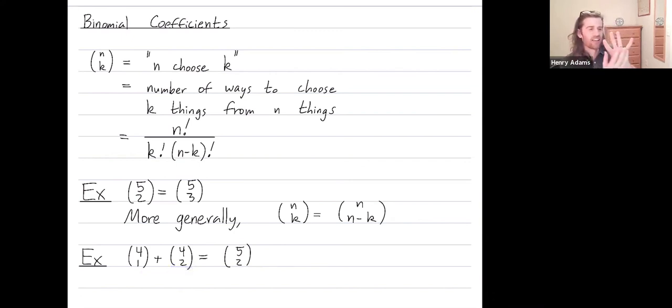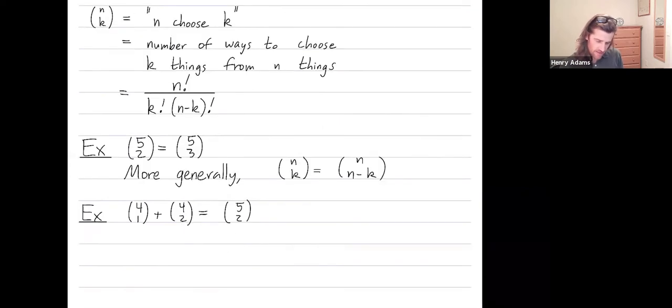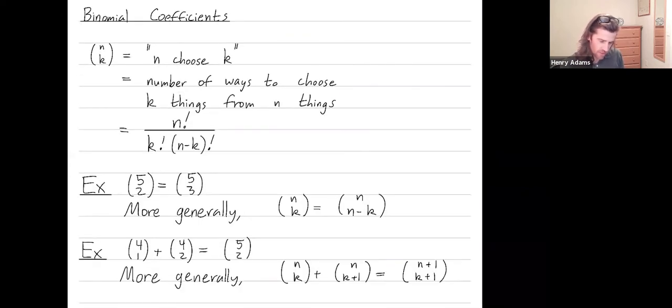Let's count that together. I have 1, 2, 3, 4, 5, 6 ways to choose 2 fingers out of 4.